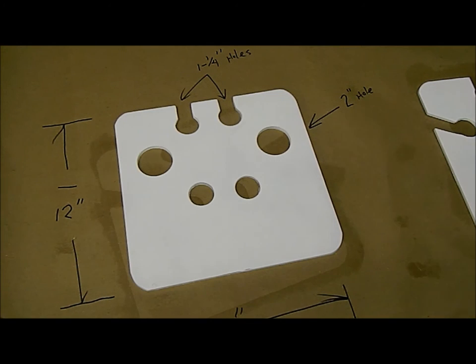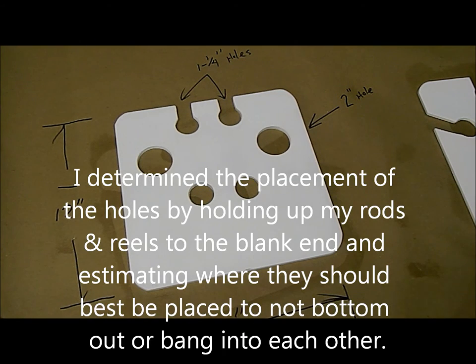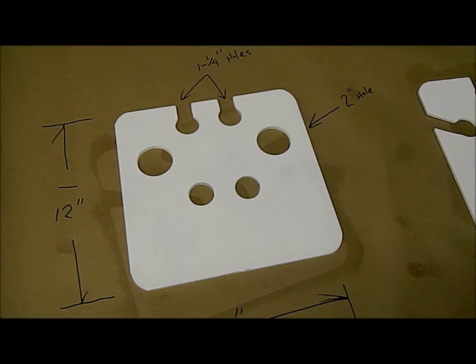And I put Kilz on it, put a couple coats of Kilz on it. Masonite is not water resistant exactly, but it can get wet, but it can't sit and soak. But I figured putting a coat of Kilz on it before I paint it, it won't hurt. So anyway, that's what I wanted to start with.